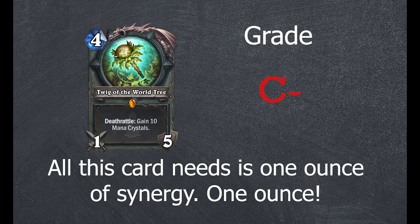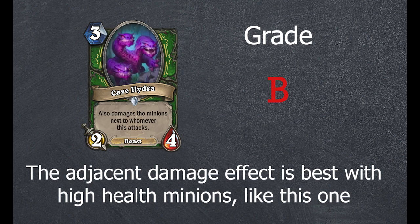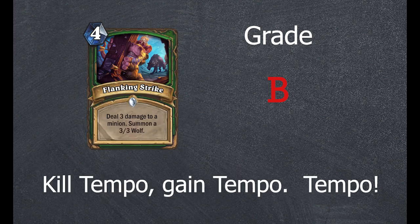Deathrattle, keep being mediocre. Clones are a good thing, I'll say. All this card needs is one ounce of synergy. One ounce. Ever wanted three mage hero powers? The adjacent damage effect is best with high health minions, like this one. Kill tempo, gain tempo. Tempo!